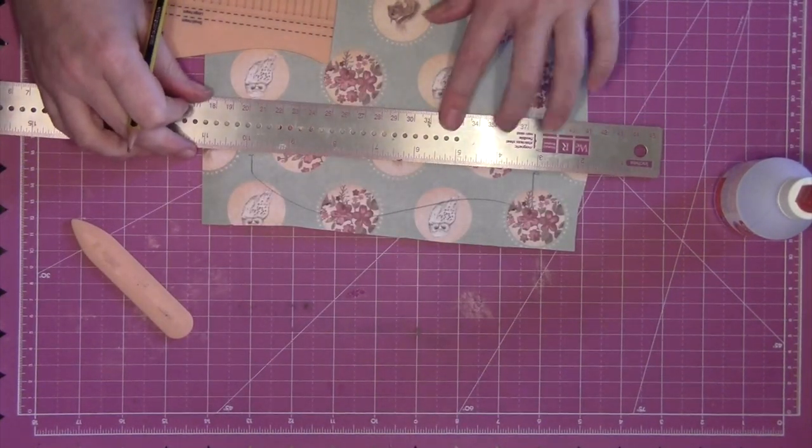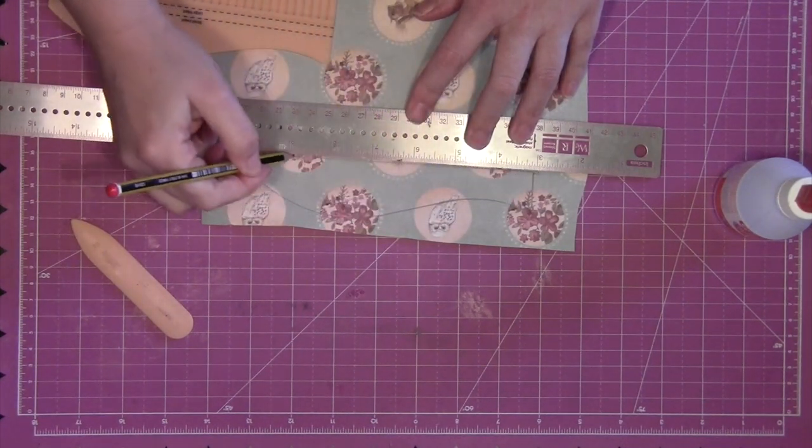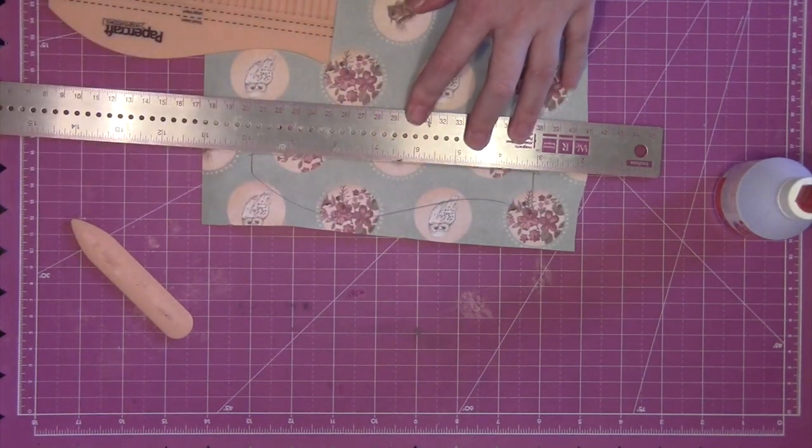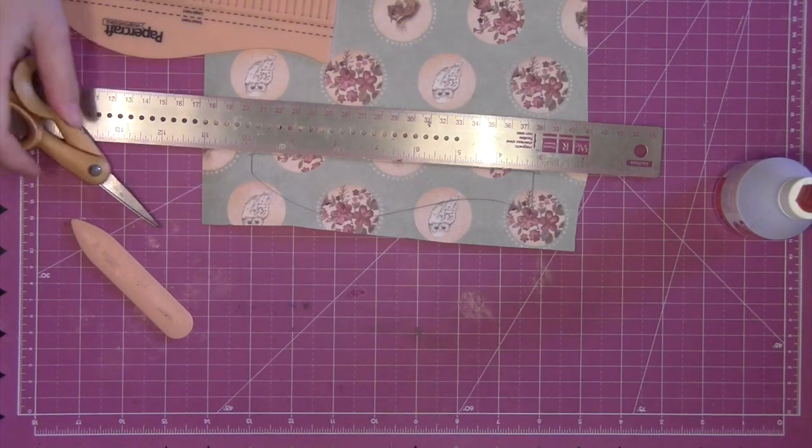Cut out your two marked shapes with a pair of scissors and then we're going to score them using the central part of the board ready to assemble our rosette.